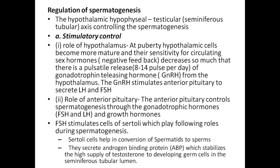Role of anterior pituitary: the anterior pituitary controls spermatogenesis through gonadotropic hormones FSH and growth hormone. FSH stimulates Sertoli cells, which play the following roles during spermatogenesis: Sertoli cells help the conversion of spermatids to sperm and create androgen-binding protein, which stabilizes a high supply of testosterone for developing germ cells in the seminiferous tubular lumen.